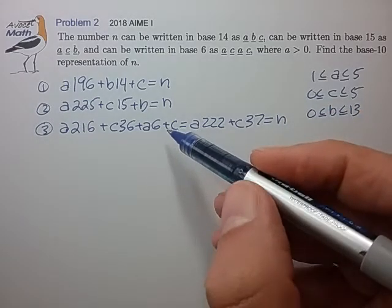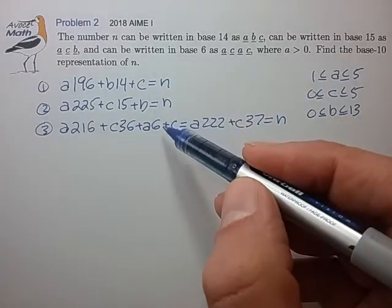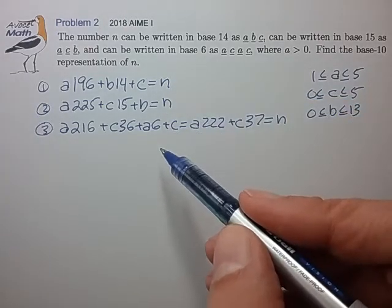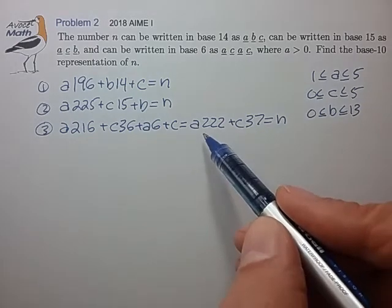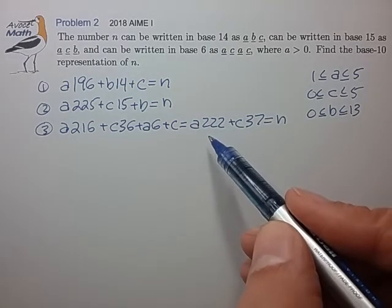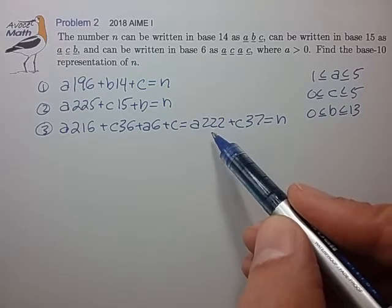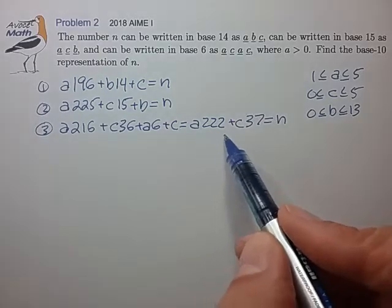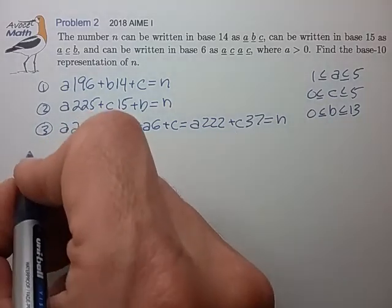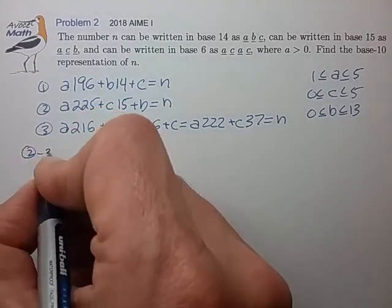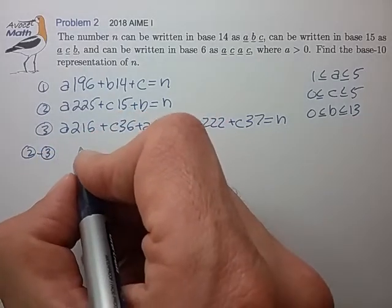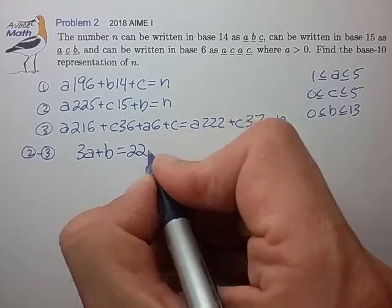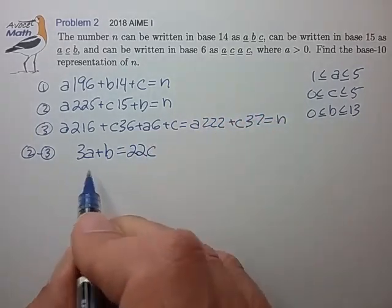Now we take the differences between these equations to generate some more useful equations with relatively small coefficients. When I see an opportunity to do that, we take equation 2 and subtract equation 3, creating 3a plus b equals 22c.